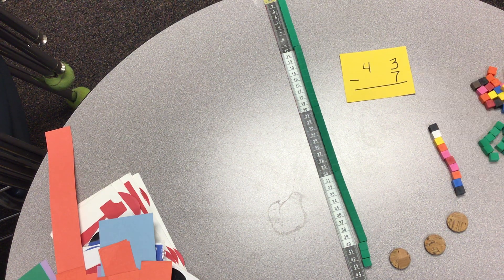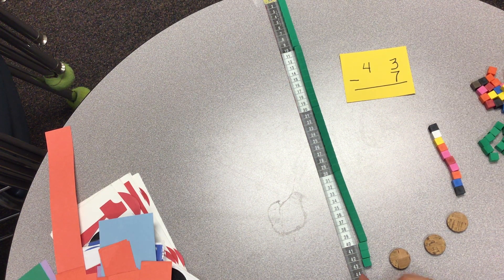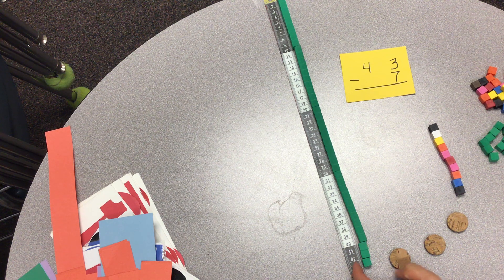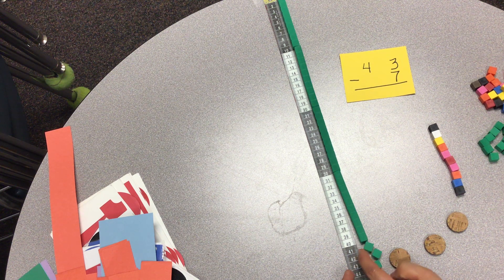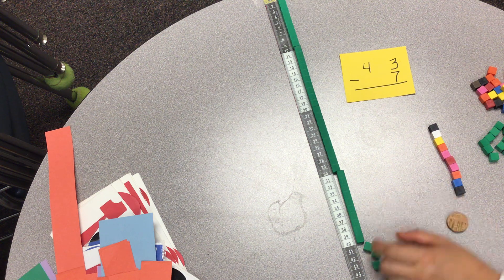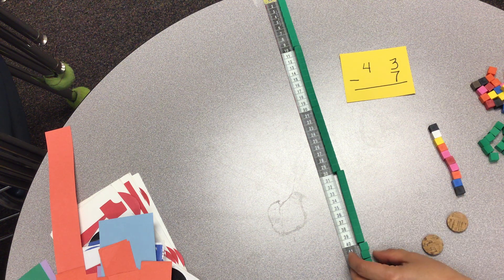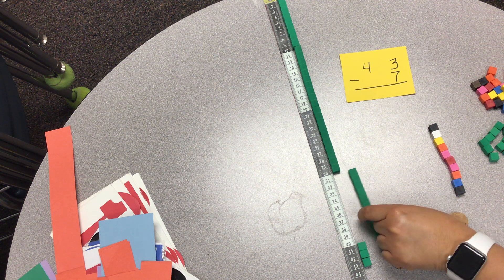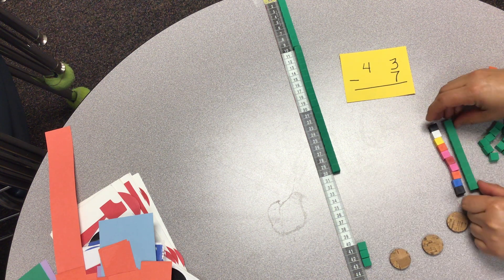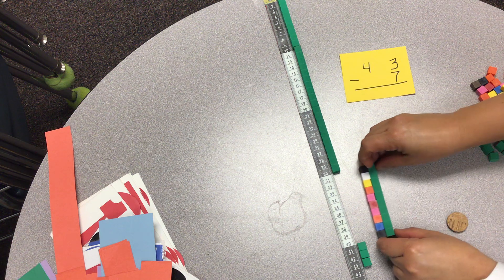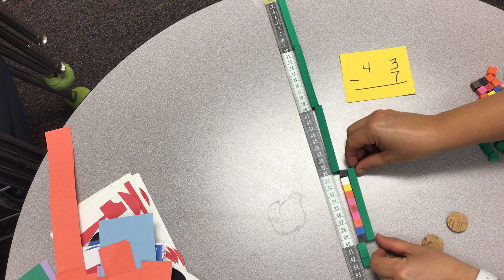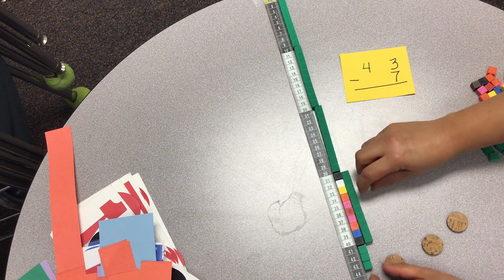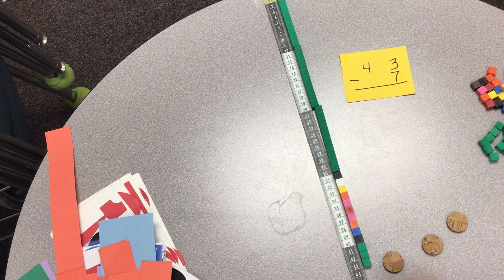When we want to subtract 7, we see that we cannot take 7 that easily. We have to do 1, 2, 3, and we have to take 7 from the next 10. But because they are all stuck together, we have to switch this 10 and substitute it with 10 ones. So we keep the same value, which is 43.